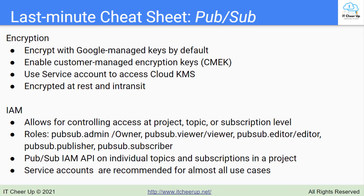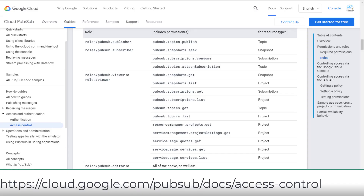The key points for IAM permissions and roles: Google Cloud allows for controlling access at the project, topic, or subscription level. IAM roles at the project level are Owner, Viewer, and Editor. But at each resource level — for example, Topic, Subscription, or Snapshot — the roles are Admin, Viewer, Editor, Publisher, and Subscriber.